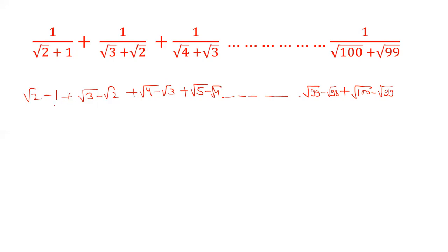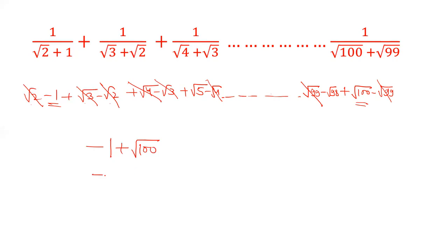Now, if we check, the +root 2 in the first term and the −root 2 in the second term cancel out. Similarly, root 3 cancels, root 4 cancels, root 99 cancels, and root 98 cancels. That means we are left with only the second part of the first term and the first part of the last term: −1 and root 100. Root 100 is 10, so 10 − 1 = 9.